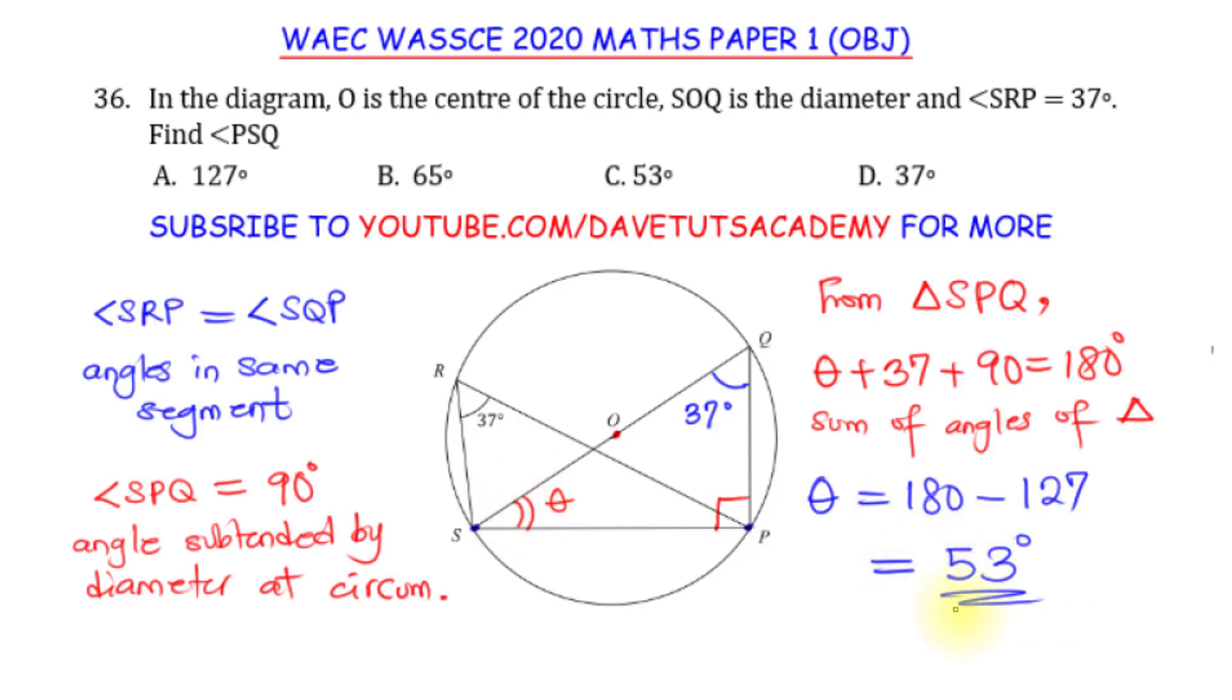So this is the way I choose to go about something. You can look at some other means that you can also employ, just be consistent in using the circumference correctly and you will see that your solution will come out for you. So the correct answer is option C, 53 degrees.